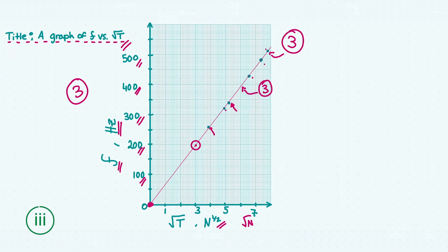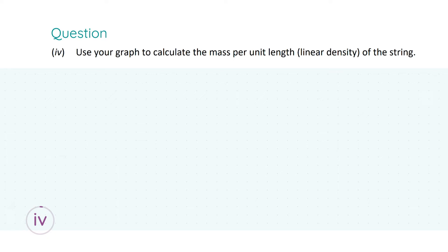You've probably wondered why there's an extra point marked in a different colour — that's for part four. In part four, we're asked to use the graph to calculate the mass per unit length of the string, which in terms of formula variables is the Greek letter μ (mu). We need to find a relationship between the slope and the mass per unit length.